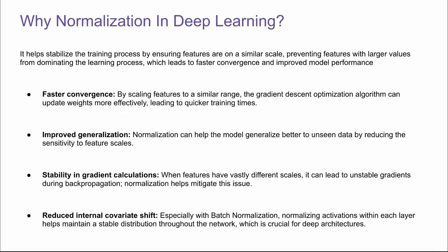So why normalization in deep learning? There are many benefits. It helps stabilize the training process by ensuring features are on a similar scale, preventing features with large values from dominating the learning process, which leads to faster convergence and improved model performance. By scaling features to a similar range, the gradient descent optimization algorithm can update weights more effectively, leading to quicker training times. The second benefit is improved generalization.